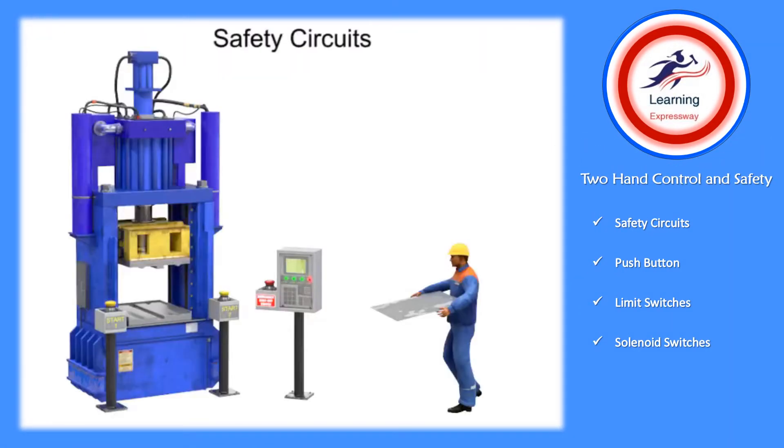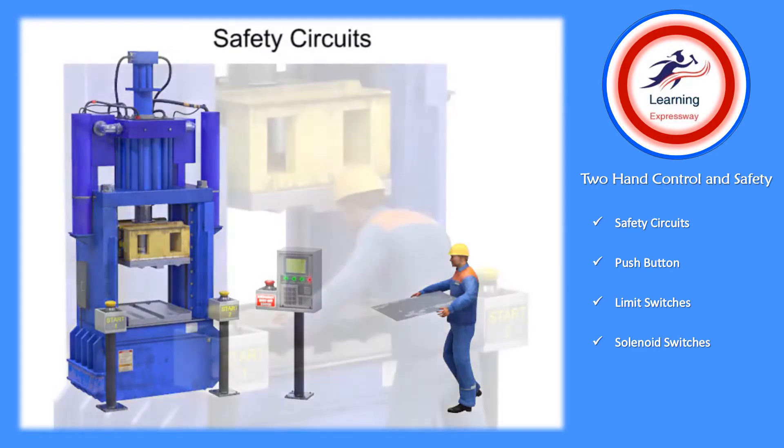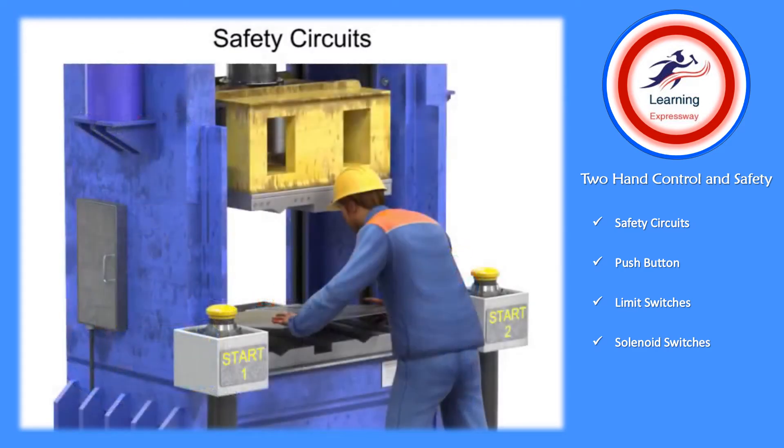When operating industrial machinery, safety is always a primary concern. Two-hand controls and anti-tie-down circuits are safety devices built into the design of electrical circuits that operate industrial machines.